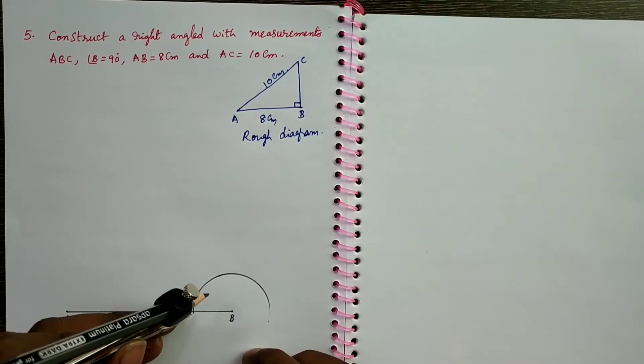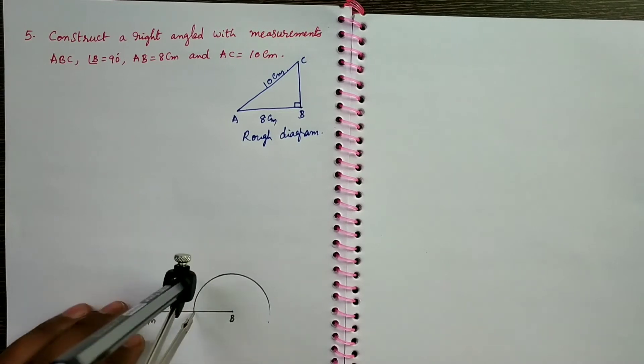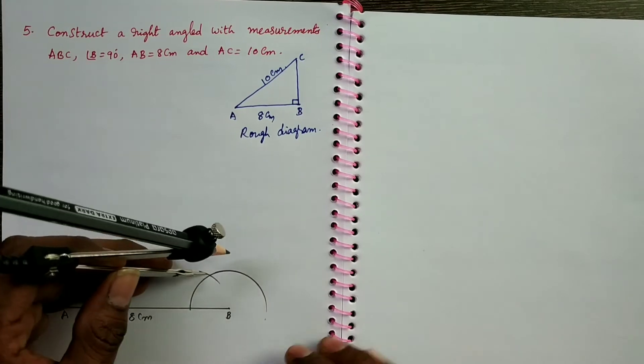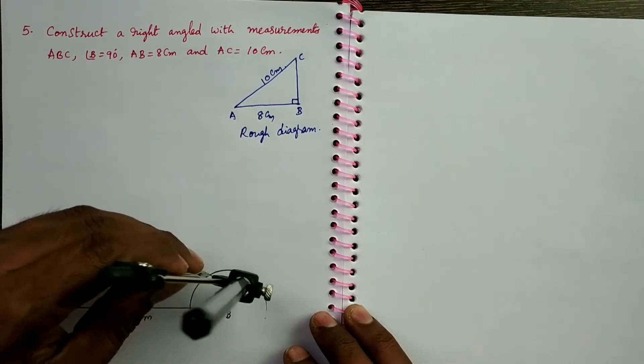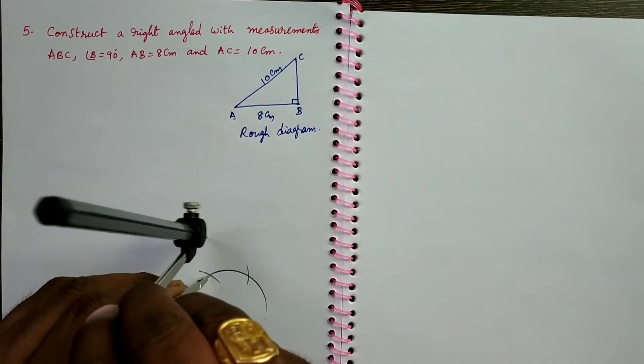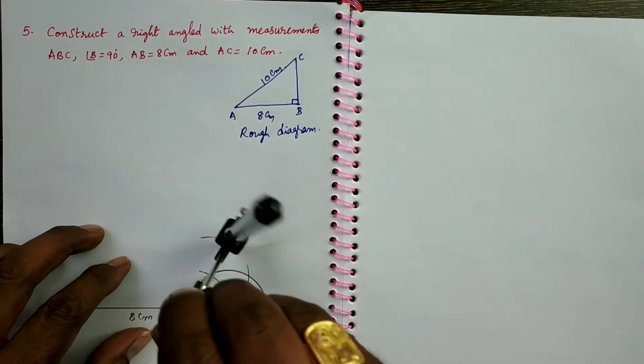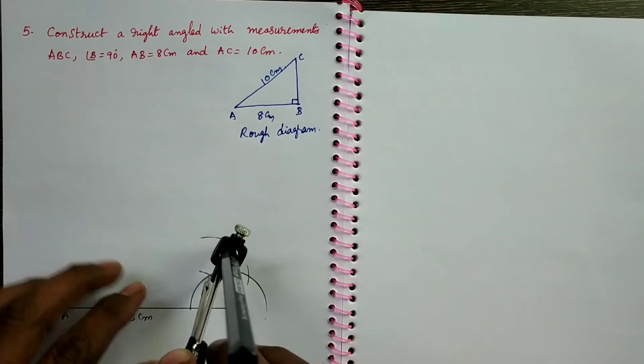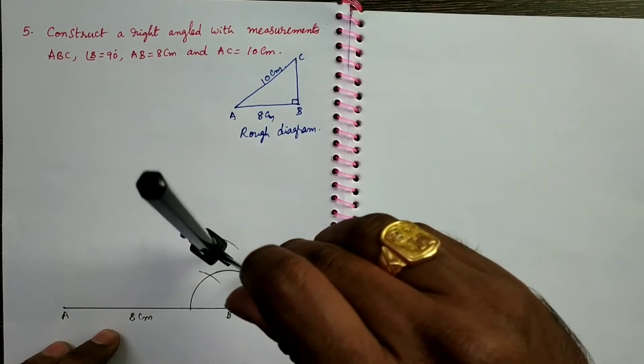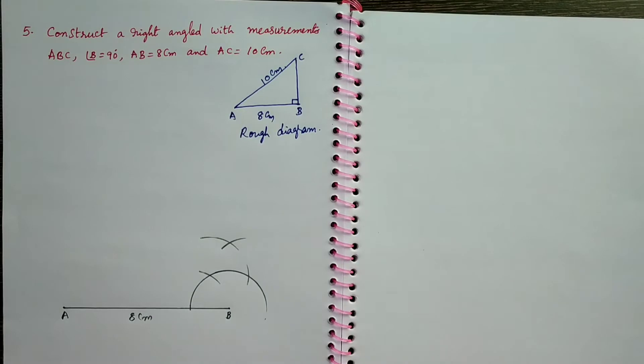From the intersecting point of the line segment and this arc, draw an arc. It indicates 60 degrees. From 60 degrees again you draw another arc. From 60 degrees draw another arc above the arcs like this. From 120 degrees draw an arc like this.